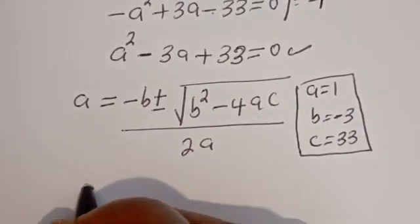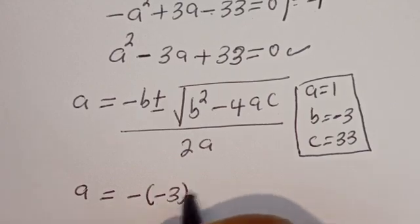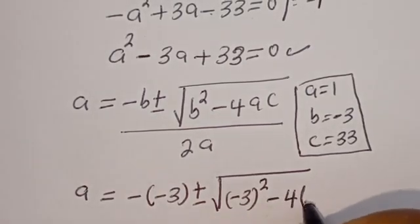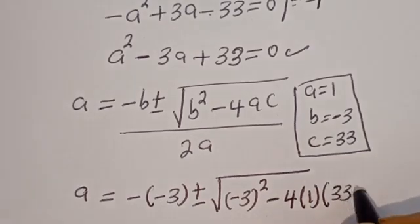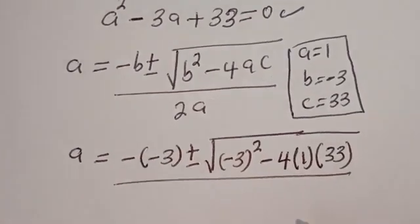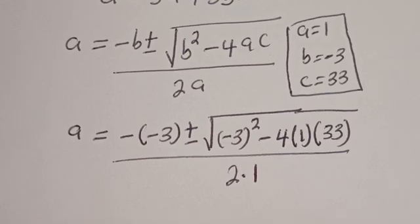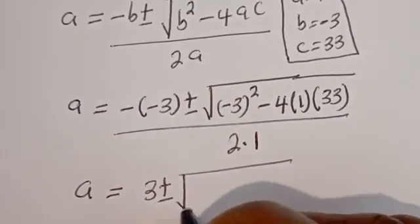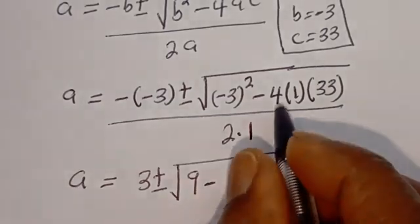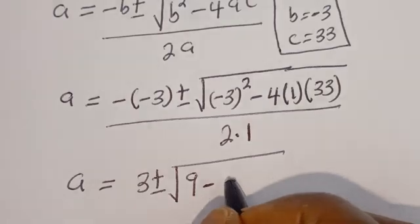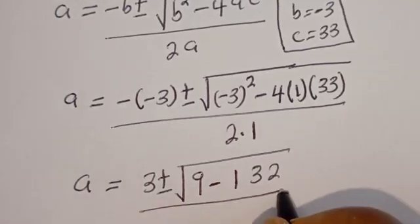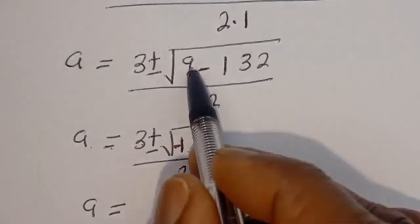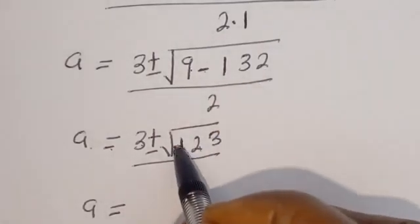Then let's substitute here. We have A equal to minus(minus 3) plus or minus square root of (minus 3) squared minus 4 times 1 times 33 — that is 132 — divided by 2 times 1, which is 2. A is equal to 3 plus or minus square root of 9 minus 132, that is minus 123, divided by 2.